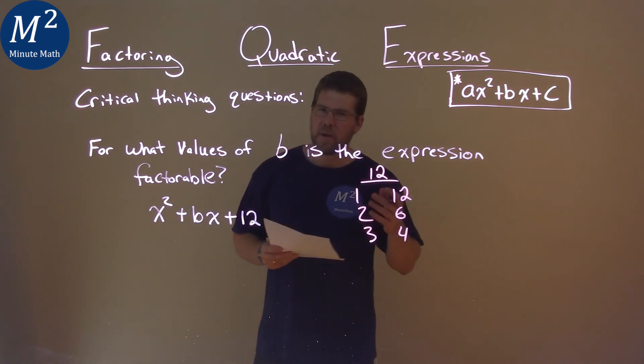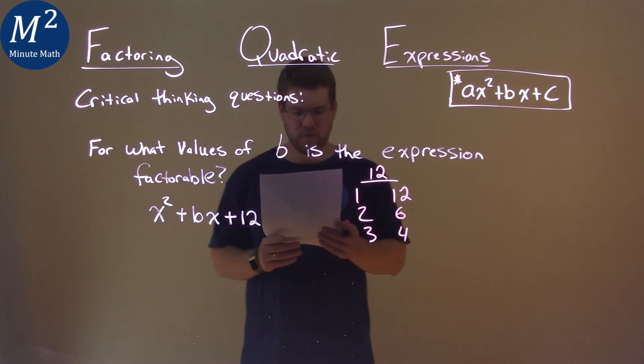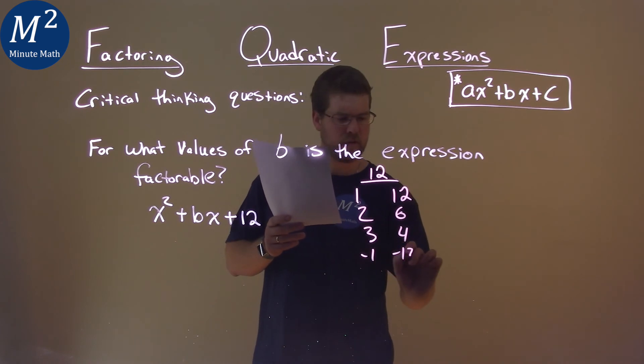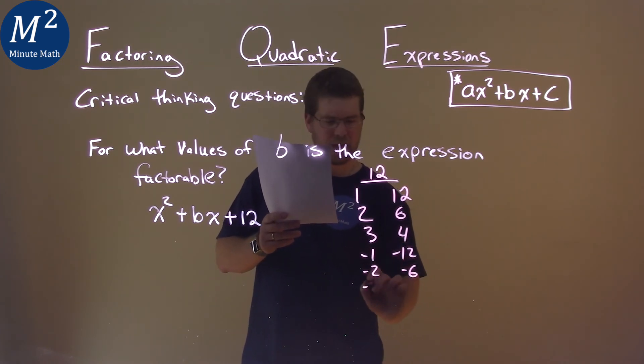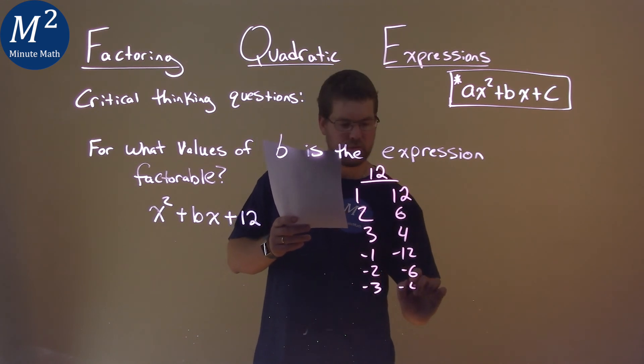But other pairs that multiply to be positive 12 could be negative 1 and negative 12, negative 2 and negative 6, and negative 3 and negative 4.